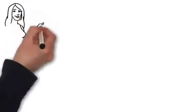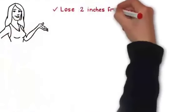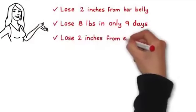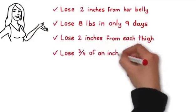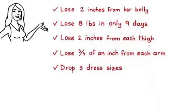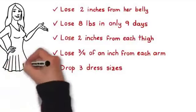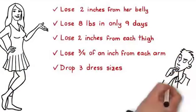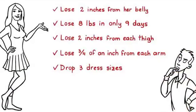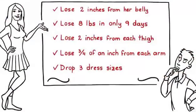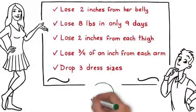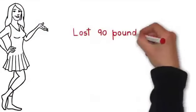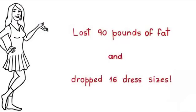She comes from a very poor line of genetics: obesity, diabetes, heart disease, etc. So I thought if this program worked for her, it might be able to help anyone. This one specific tip that I'm about to share with you helped Lori lose two inches from her belly, lose eight pounds in only nine days, lose two inches from each thigh, lose three quarters of an inch from each arm, and drop three dress sizes.